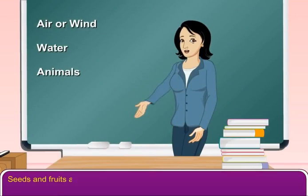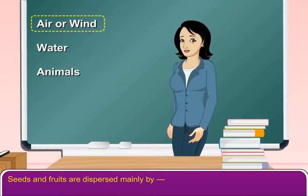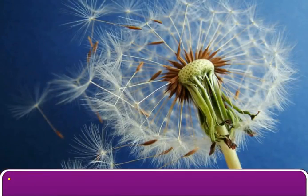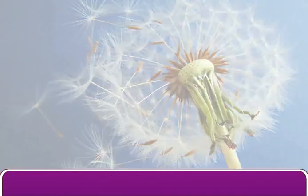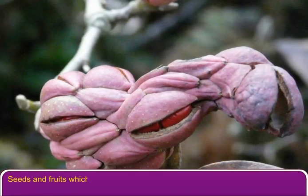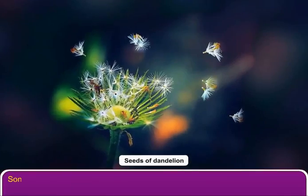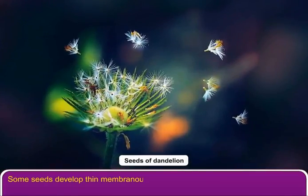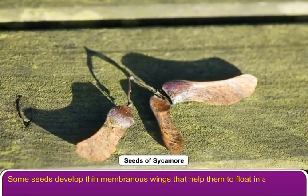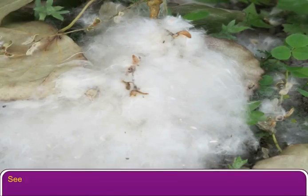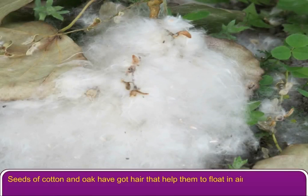Seeds and fruits are dispersed mainly by air or wind, water, and animals. Seeds and fruits which are dispersed by air are light in weight. Some seeds develop thin membranous wings that help them to float in air. Seeds of cotton and oak have got hair that help them to float in air.